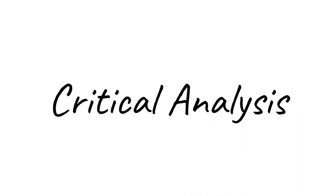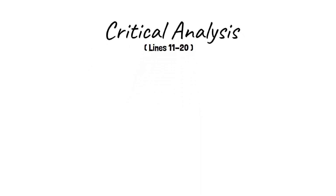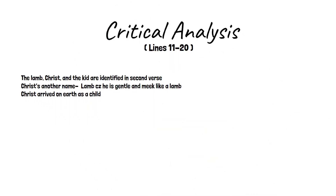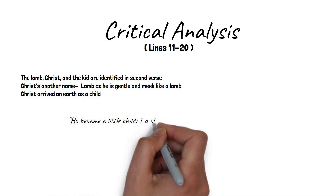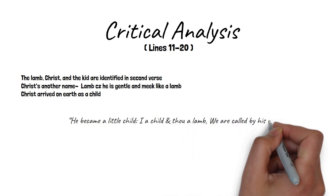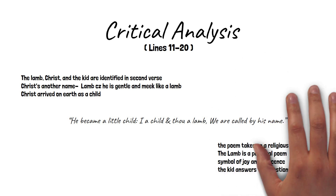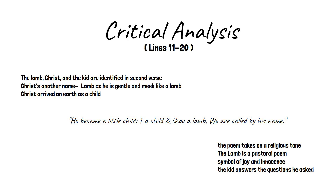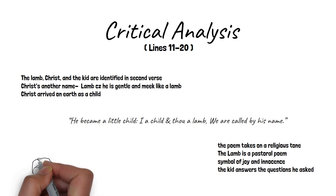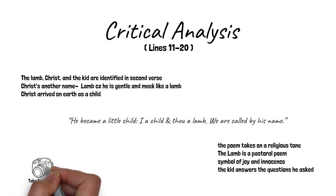Let us analyze the last ten lines of the poem for a better understanding. The lamb, Christ, and the kid are all identified in the poem's second verse. Christ has another name, Lamb, since he is gentle and meek like a lamb. When Christ originally arrived on this world as the Son of God, he was also a child. As a result, the following lyrics are appropriate: He became a little child, I a child and thou a lamb, we are called by his name. In this poetry, the youngster speaks to the lamb as if it were another child who could answer what is said. Because of the picture of Christ as a kid, the poem takes on a religious tone. The Lamb is a pastoral poem, and Blake's pastoral note is another symbol of joy and innocence. In the second stanza, the kid answers the questions he asked the lamb in the first stanza.